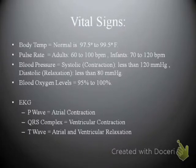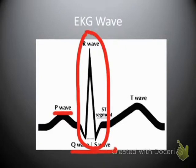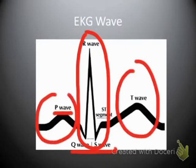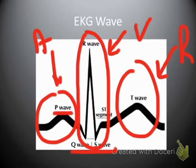Looking at the EKG waveform, we have the P wave, then the QRS complex, and then the T wave. The P wave corresponds to atrial activity, the QRS to ventricular contraction, and the T wave to relaxation. The QRS complex is notably short, abrupt, and reaches a higher peak because the ventricles must contract forcefully to expel blood into the pulmonary arteries or aorta.